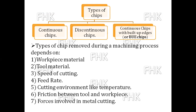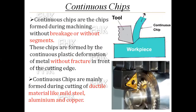Let us see each type one by one. What is a continuous chip and what are its special characteristics? Continuous chips are chips formed during machining without breakage or without segmentation. These chips are formed by continuous plastic deformation of metal without fracture in front of the cutting edge.